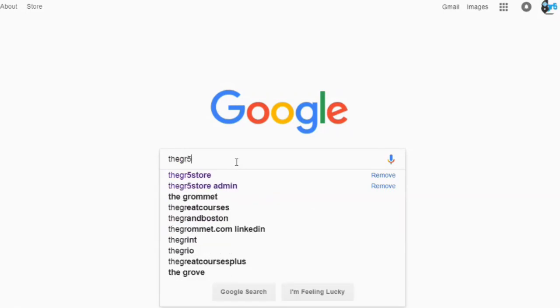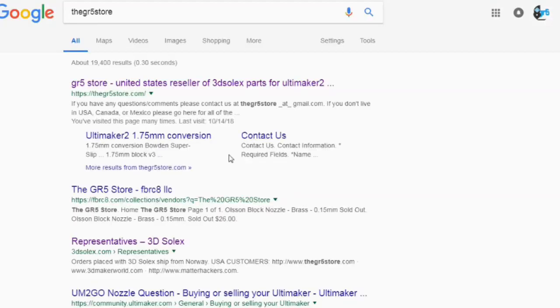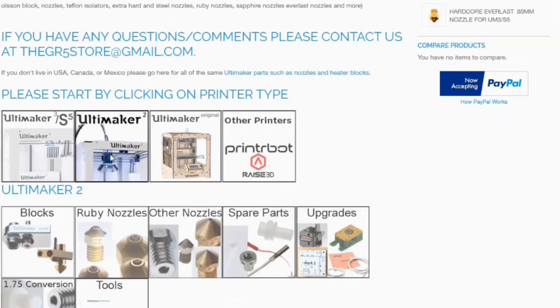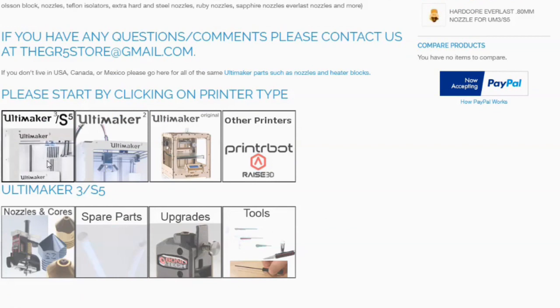So I sell parts for 3D printers for people in the United States. I sell mostly for Ultimaker printers but also for other printers I sell nozzles and Ruby nozzles and stuff. For Ultimaker printers mostly spare parts and upgrades.